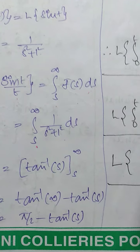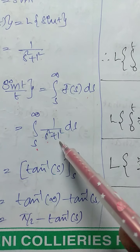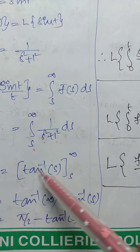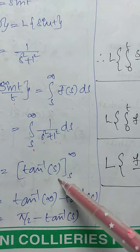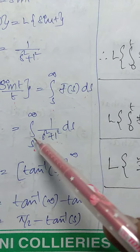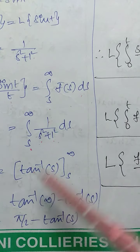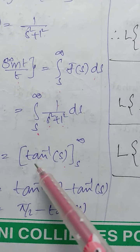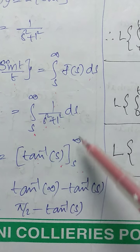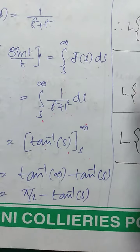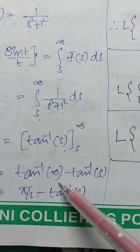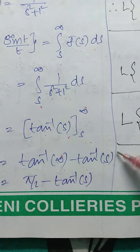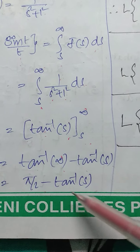This integral is in the form ∫ 1/(x² + a²) dx = (1/a)·tan⁻¹(x/a). Applying that formula: (1/1)·tan⁻¹(s/1) evaluated from s to infinity, which gives tan⁻¹(∞) minus tan⁻¹(s). Since tan⁻¹(∞) = π/2, we get π/2 − tan⁻¹(s).